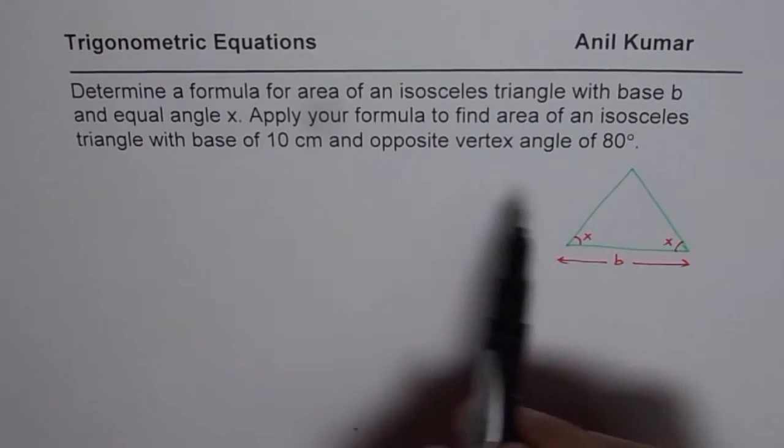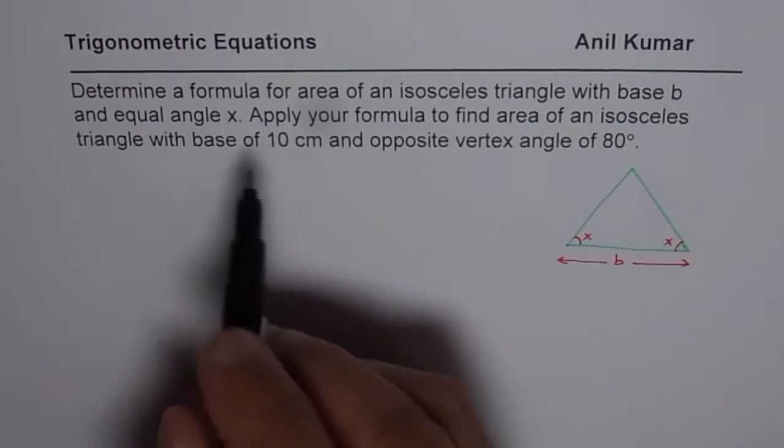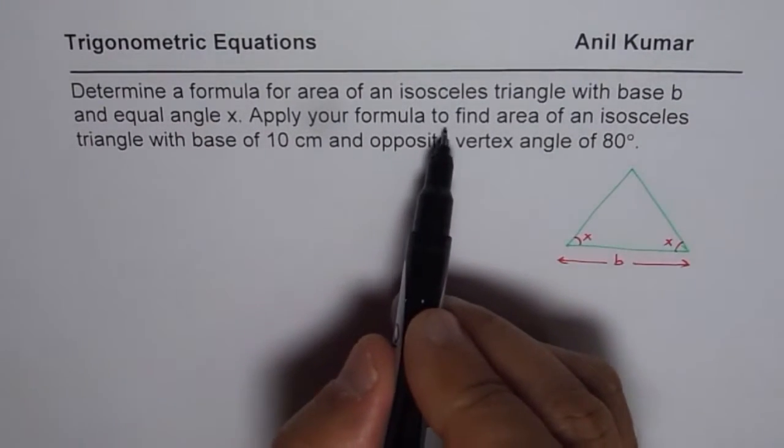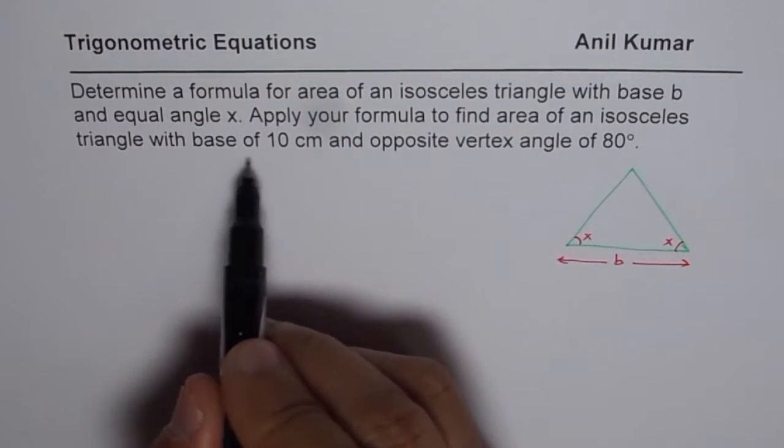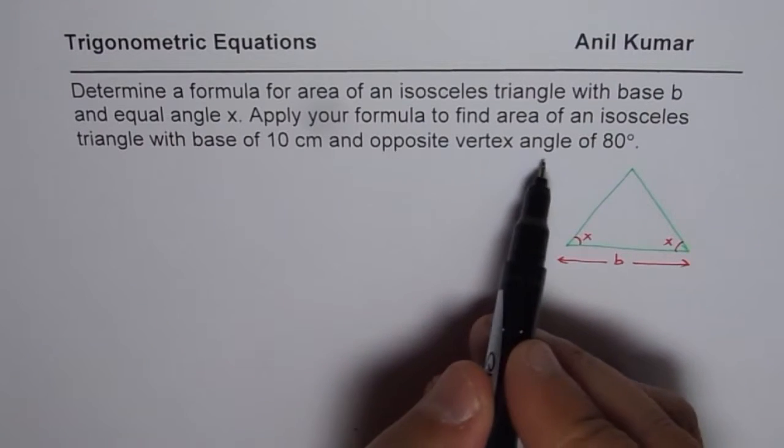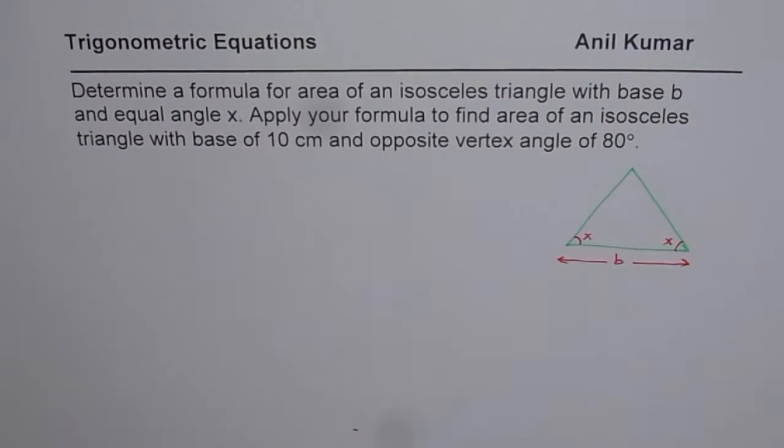We need to find area of this triangle. Now apply your formula to find area of an isosceles triangle with base 10 cm and opposite vertex angle of 80 degrees. So that's the second part.